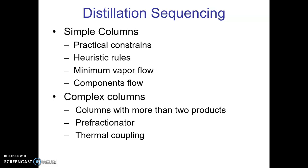When discussing distillation sequencing, we consider simple columns and complex columns. Within simple columns we look at how various separation sequences can be made and what the practical constraints are — when we have say 10–15 sequences in front of us, which are practically acceptable and which are not. Based on practical experience, certain thumb rules or heuristic rules have been developed. Heuristics give a qualitative idea and a yardstick to compare various sequences; the vapor rate going inside the distillation column can be calculated and compared, and the sequence with the least vapor flow is considered the most energy-efficient. Complex columns are those having more than two products, possibly including side streams.